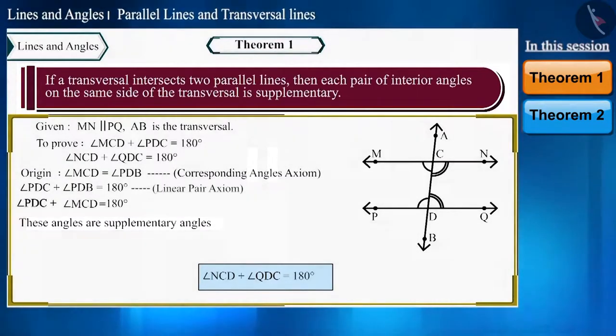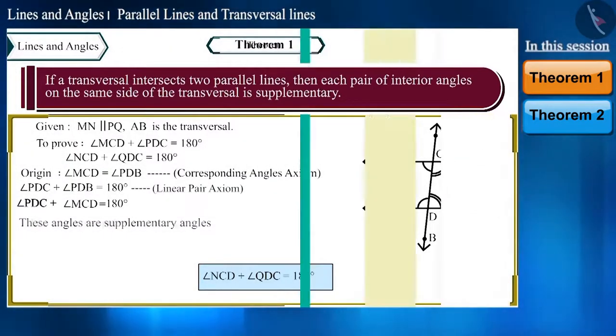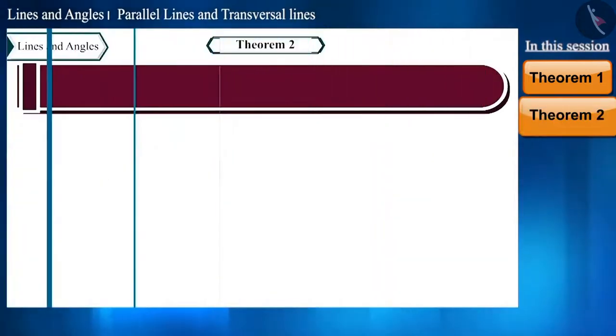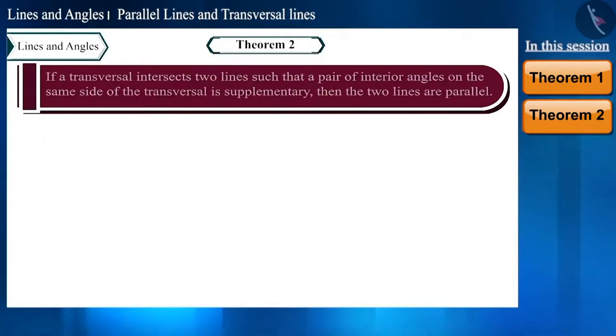Let's move ahead. In our next question we will prove the converse of this theorem. If a transversal intersects two lines such that a pair of interior angles on the same side of the transversal is supplementary, then the two lines are parallel.